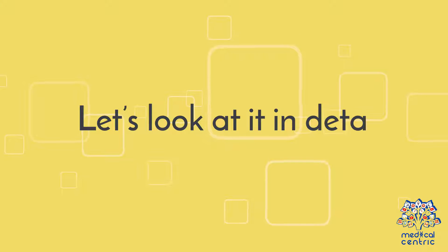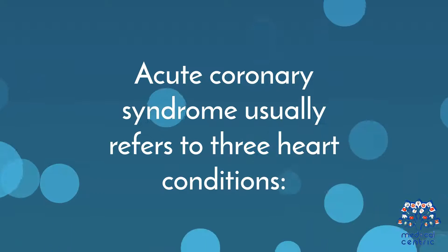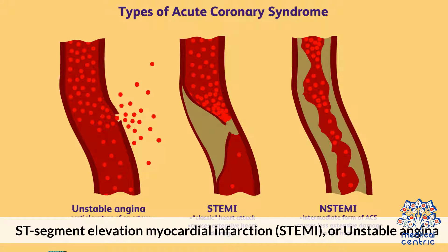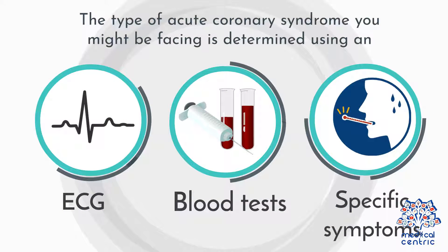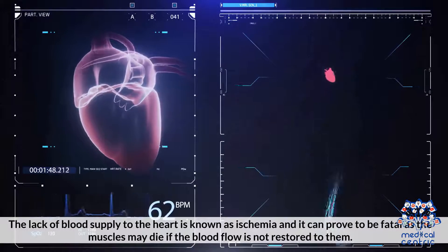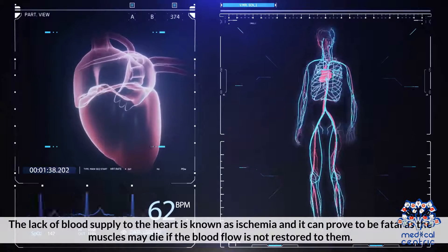Acute coronary syndrome usually refers to three heart conditions: number one, non-ST-segment elevation myocardial infarction or heart attack (NSTEMI); number two, ST-segment elevation myocardial infarction (STEMI); or number three, unstable angina. The type of acute coronary syndrome you might be facing is determined using an ECG and the specific symptoms. The lack of blood supply to the heart is known as ischemia and can prove to be fatal, as the muscles may die if blood flow is not restored to them.